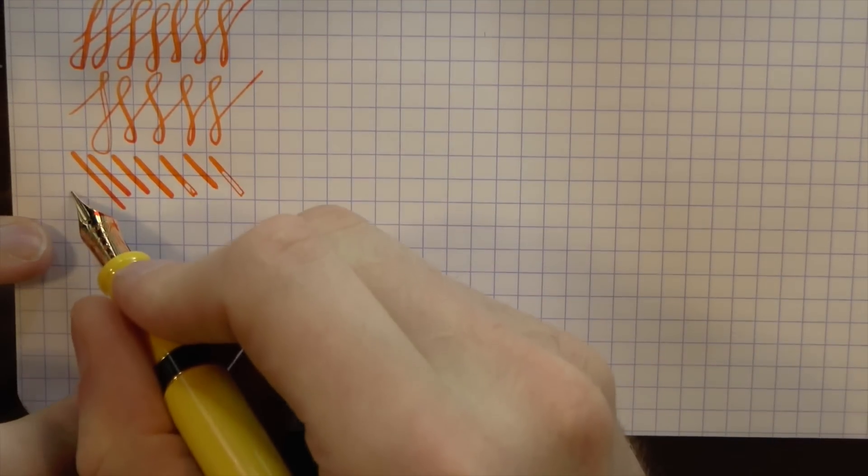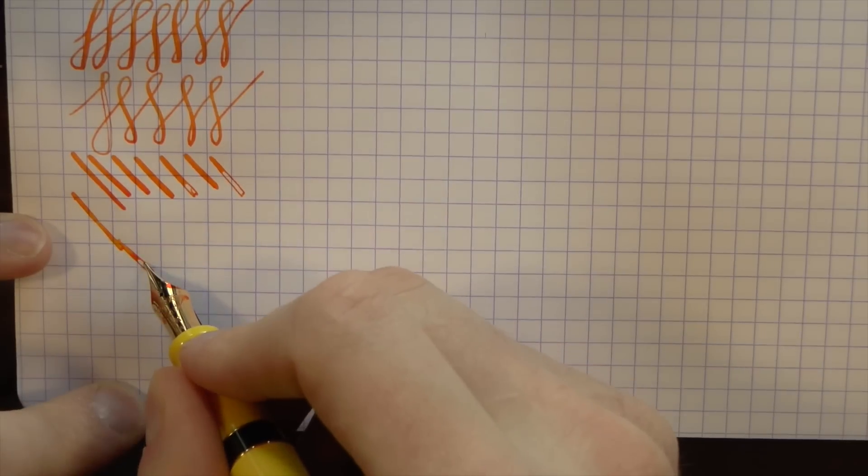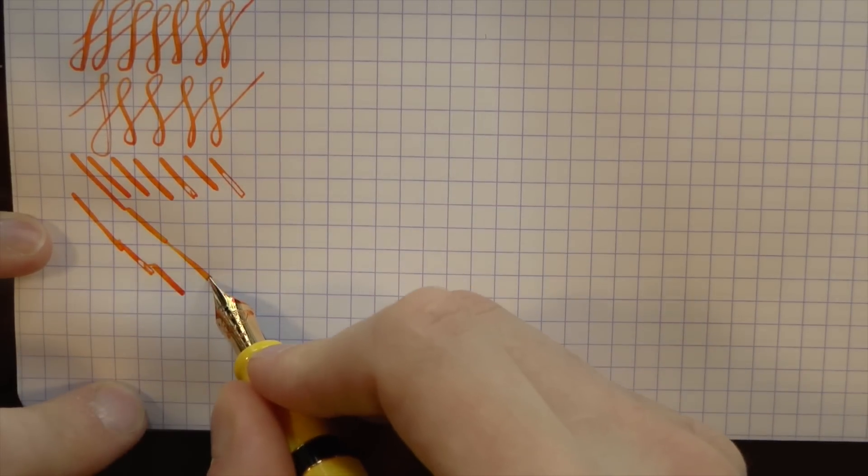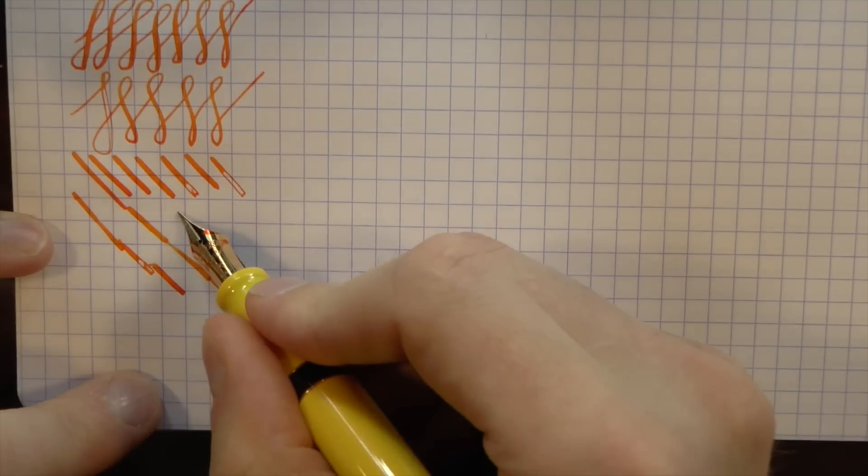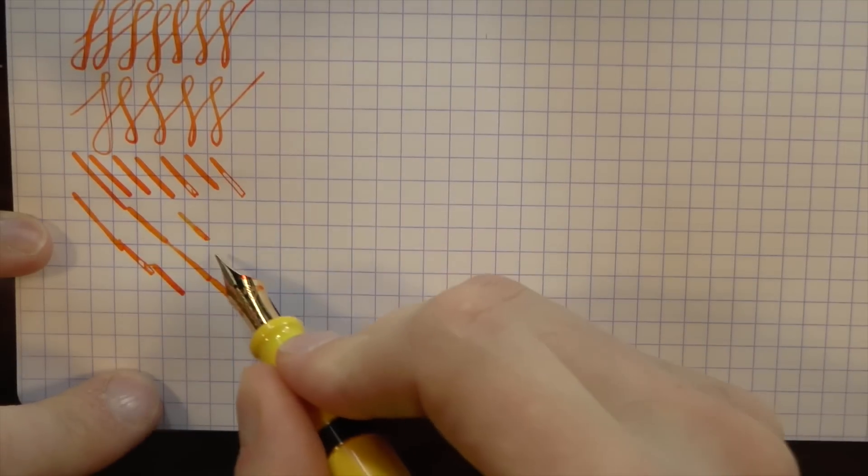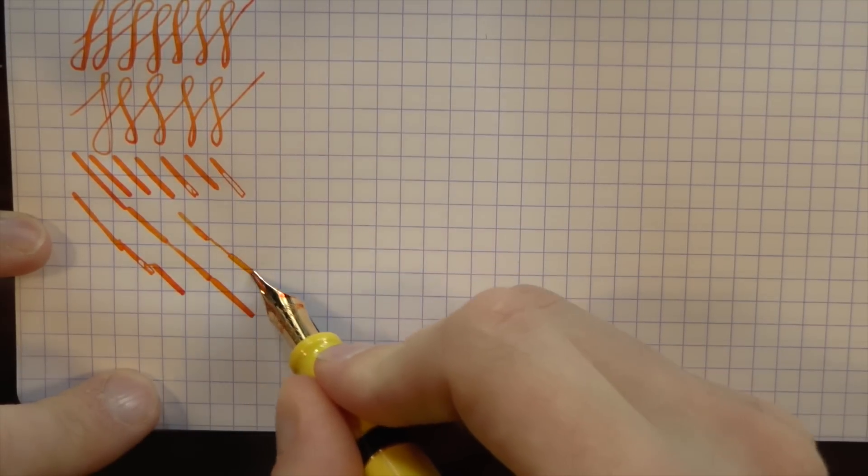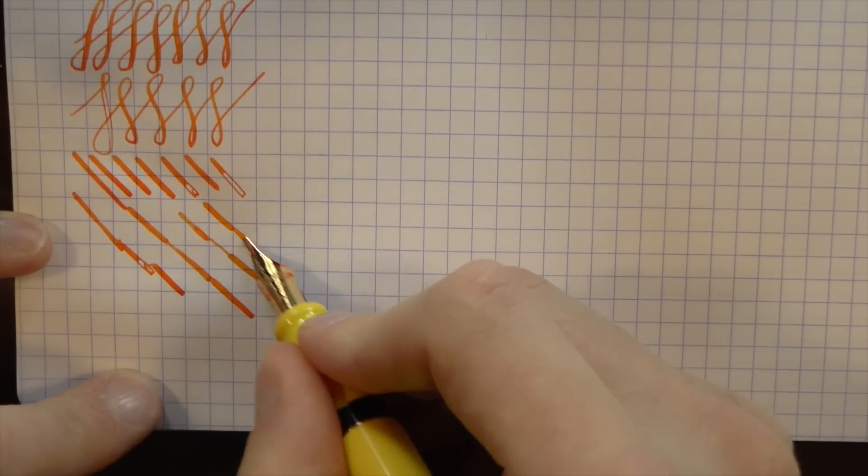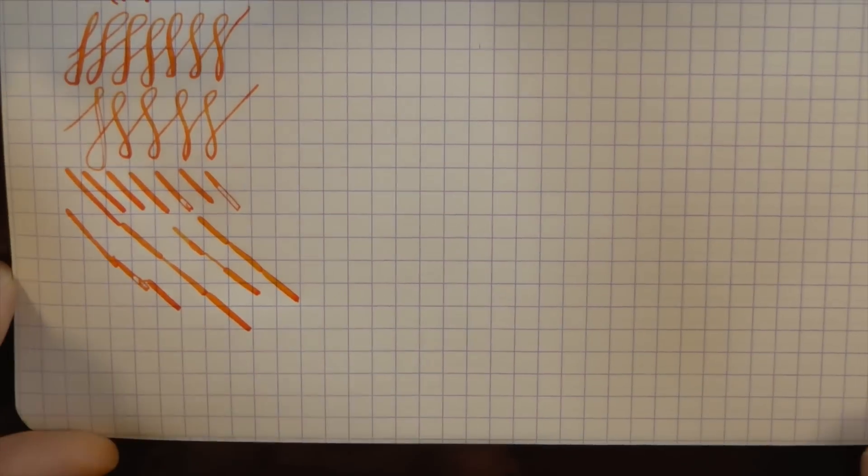A vintage 14k nib flexes a lot more than this. Also doesn't railroad as quickly. And I think that's the most important part. Snaps back faster. So if you were to do that, pressure, no pressure, pressure, no pressure, with a vintage nib, you would end up with something like that. Then a thin line. Then a thick line again. And that snapping back, the Aurora just isn't doing very well.